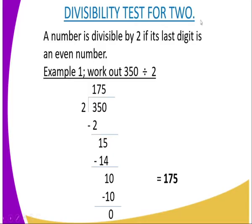First, we are going to start with the divisibility test for 2. A number is divisible by 2 if its last digit is an even number. In an exam, you can be given any number, so it is your responsibility to look at the last digit to see if it is an even number. For example, we can have a number like 350. The last digit 0 is normally termed as an even number, and through the long division, when we divide 350 by 2, we are getting 175. So that is to mean our number is divisible by 2.